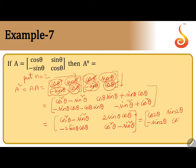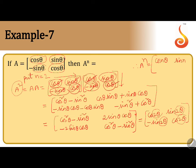So you can observe: A has cos(1·θ), sin(1·θ), -sin(1·θ), cos(1·θ). When you take A squared, we get cos(2θ), sin(2θ), -sin(2θ), cos(2θ). So in general, if you generalize this, A^n = [cos nθ, sin nθ; -sin nθ, cos nθ].